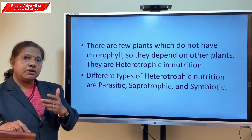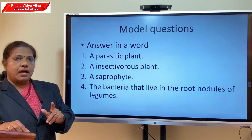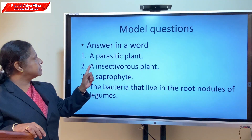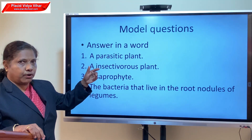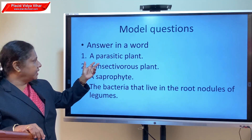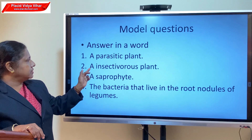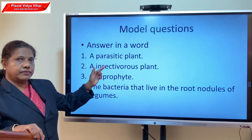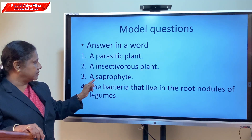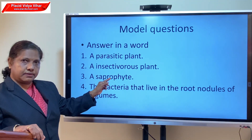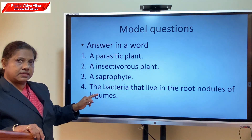Write all these questions in your notebook and write the answers yourself. Model questions include one-word answers: a parasitic plant — Cuscuta; an insectivorous plant — pitcher plant; a saprophyte — mushroom; the bacteria that live in the root nodules of legumes — Rhizobium bacteria.